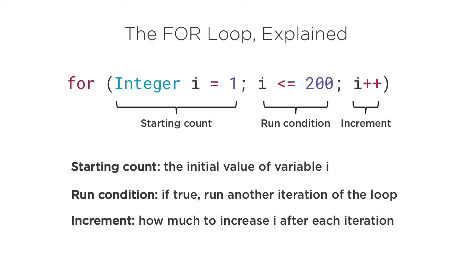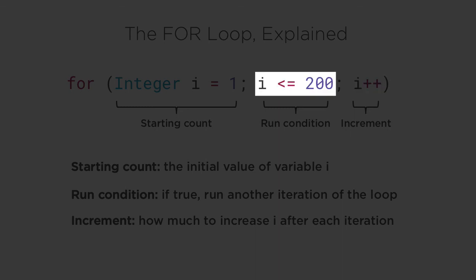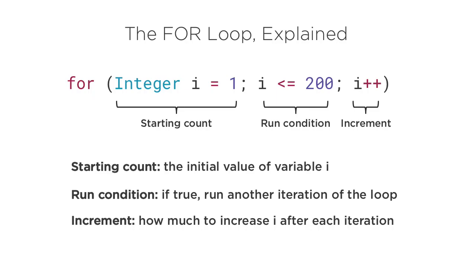So to summarize this entire for loop in one sentence, it basically says, start our loop by setting i equals to 1, add 1 to i after each iteration, and keep looping as long as i is less than or equal to 200. Thus, our loop will run exactly 200 times.